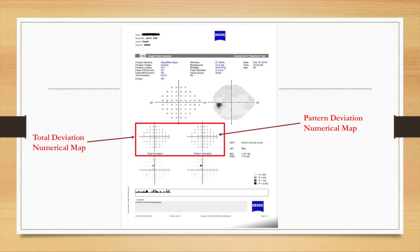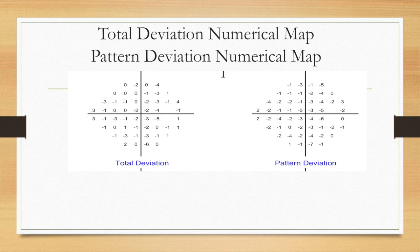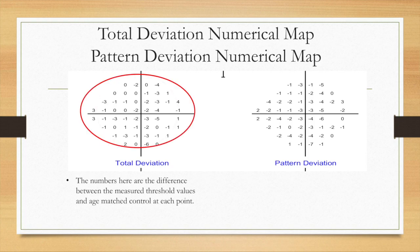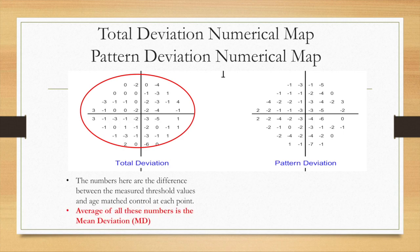Now the total deviation numerical map and pattern deviation numerical map. On the left you can see the total deviation numbers, and to the right you can see the pattern deviations. Total deviation is the decibel deviation of the measured threshold value — presented in the sensitivity numerical map — from the age-matched control at each point. The average of all these numbers on the total deviation map is the mean deviation. I will talk in more detail about the mean deviation later on.